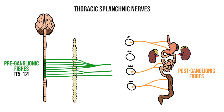The aorticorenal ganglion, on the other hand, sends postganglionic fibres to the kidneys and suprarenal glands. So now we just need to look at which splanchnic nerve goes to which ganglion. The greater splanchnic nerve sends preganglionic fibres to the celiac and superior mesenteric ganglia. Some of the lesser splanchnic fibres also pass to the superior mesenteric ganglion, with other fibres from the lesser and least splanchnics synapsing at the aorticorenal ganglion.